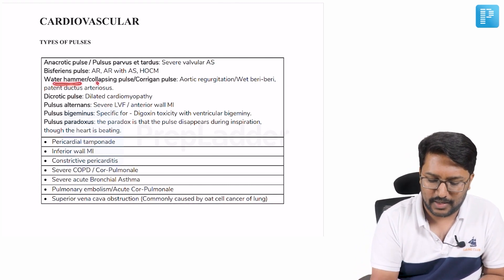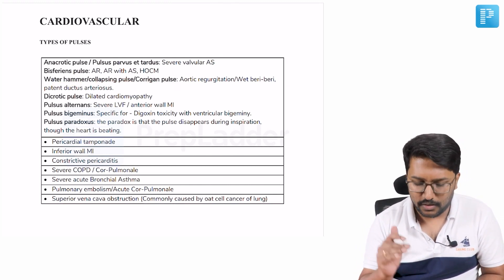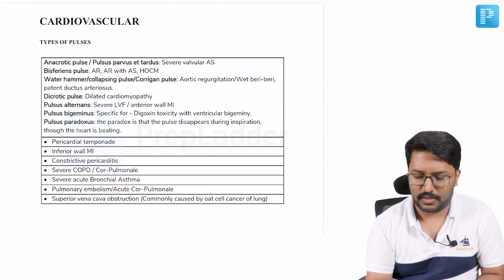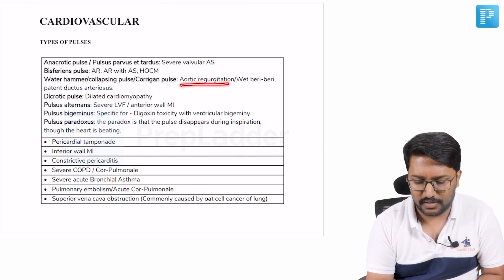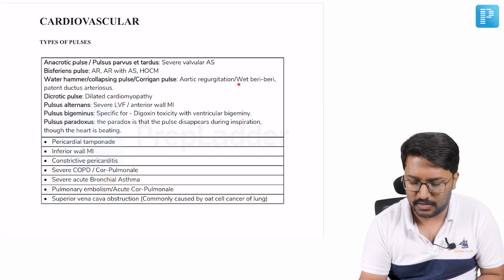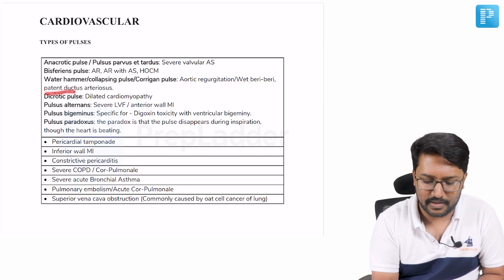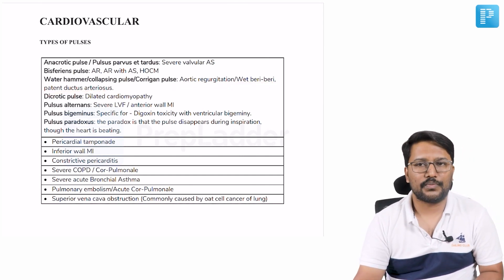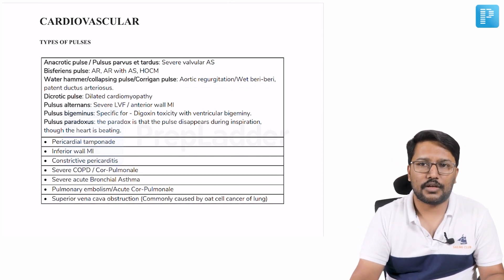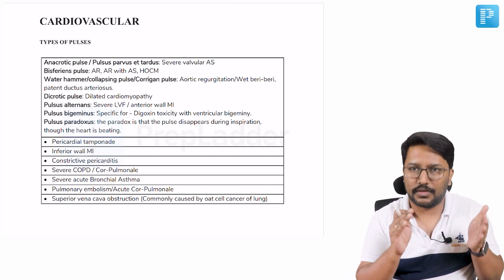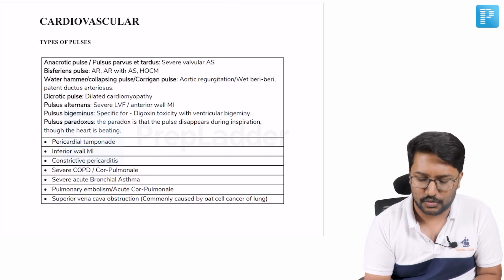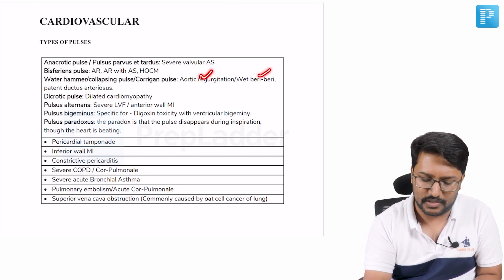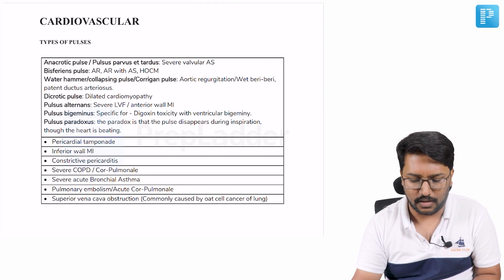Then where do we see water hammer, collapsing, or Corrigan's pulse? Look at the options provided. So we see aortic regurgitation presenting with Corrigan's pulse, wet beriberi, or patent ductus arteriosus. So the essence is whenever you have a wide pulse pressure, you can have a collapsing or water hammer type of pulse. In all these cases, you generally see wide pulse pressure.